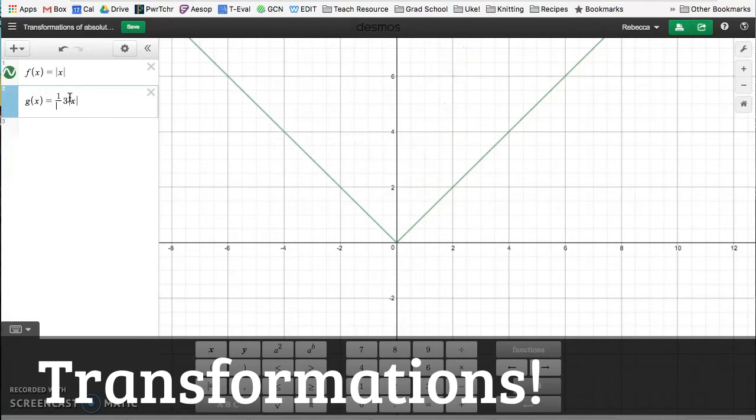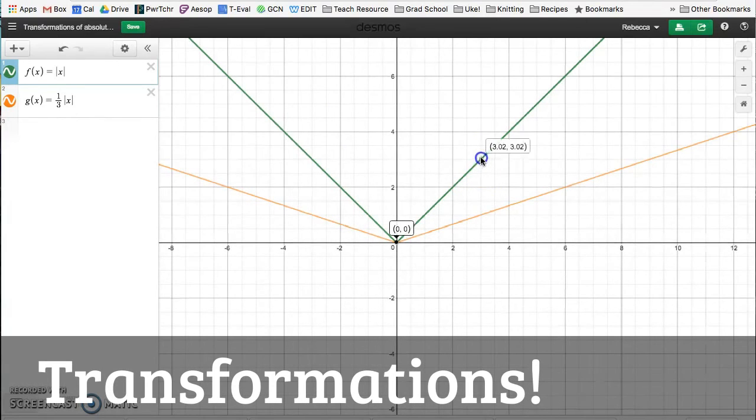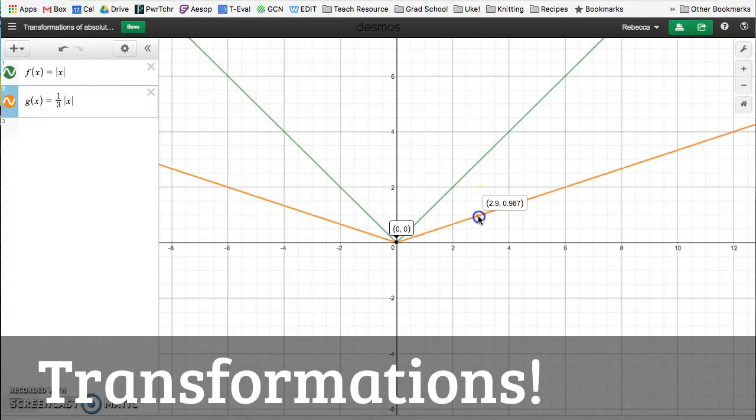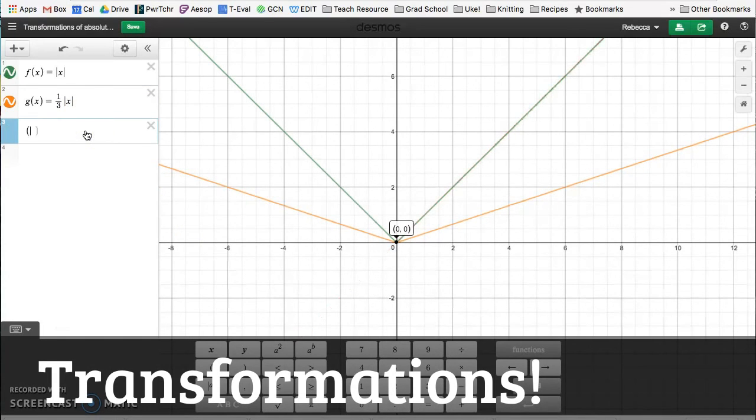If I were to multiply by a third, instead of multiplying by three, it's going to take all the y values and cut them in three pieces. So whereas before I had the point three, three, it's going to take the y value, divide it by three, and I'm going to have the point three, one. Here, I can type that in. Three, comma, one. And there it is.